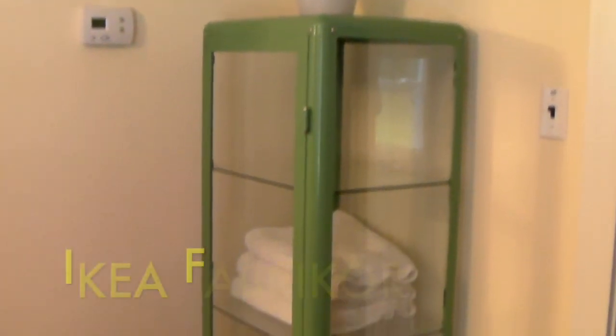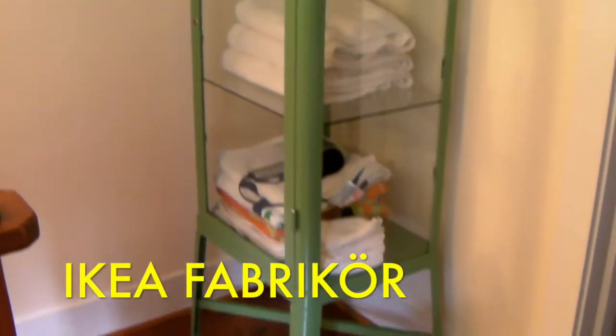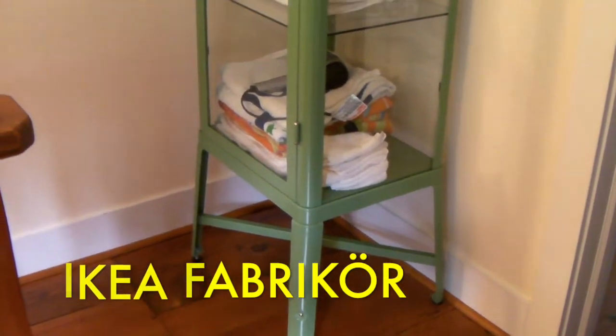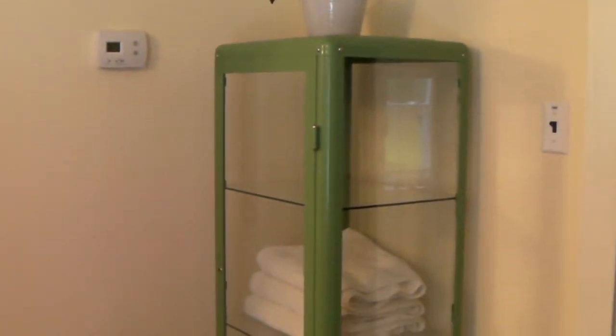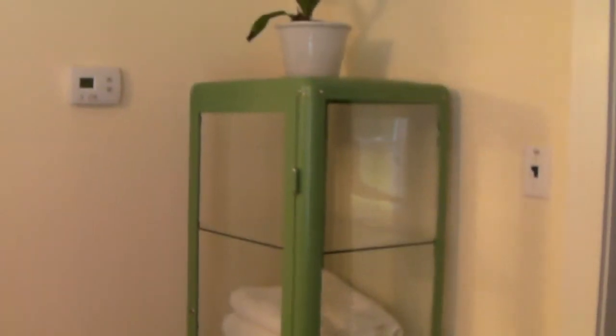This is the beautiful IKEA Fabricor glass and metal cabinet. It's in green. They no longer make it in green. I don't know why because it looks great.